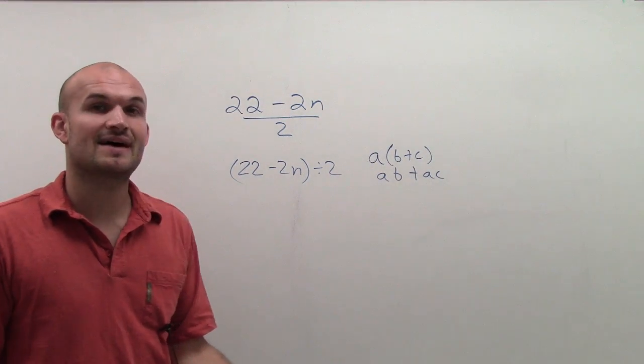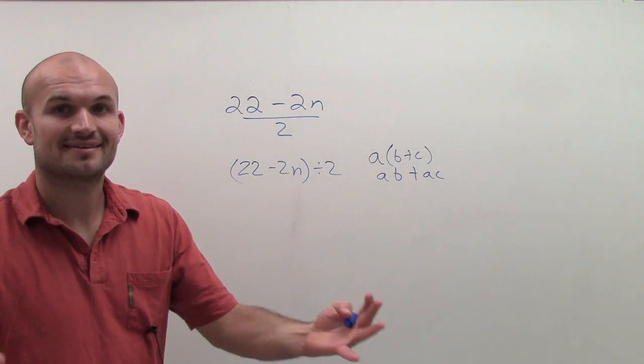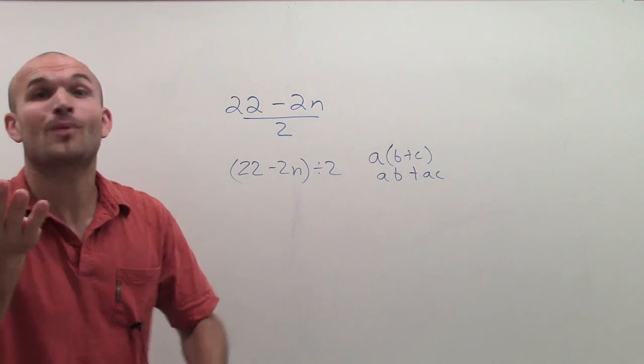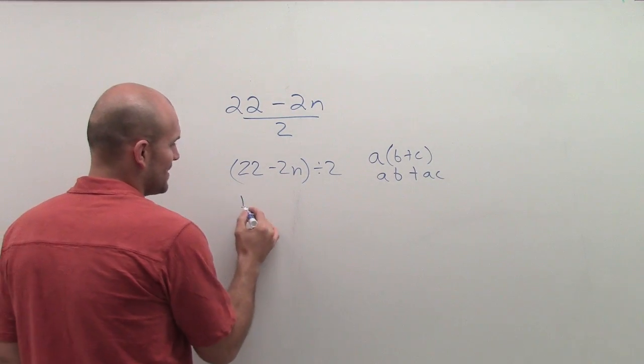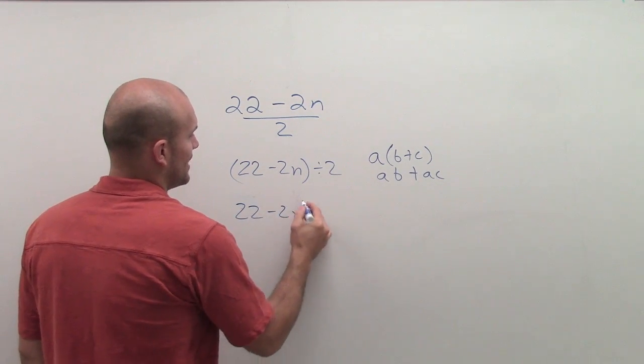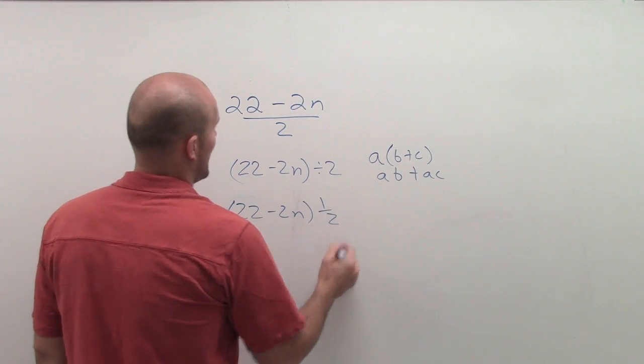Well, another way to think of dividing by 2 is to multiply by 1 half. So I multiply by 1 half. So I have 22 minus 2n times 1 half.